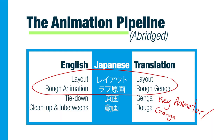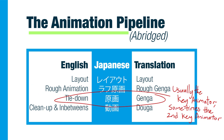So what one generally thinks of as an animator is responsible for the work starting in layout and the rough animation or rough Genga. Japanese animators are layout artists first and animators second, and then they would usually do their own tie-downs or Genga. In recent times, the process of the tie-down Genga is sometimes given to another artist, usually a junior animator who is somewhere between the key animator and the clean-up artist.